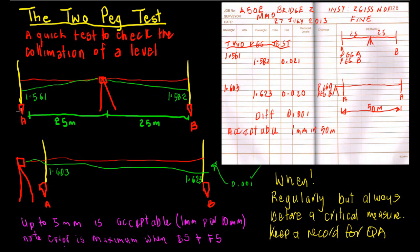Then we take a reading to staff A and we'll treat that as a backsight. So we've set up your level book or your field note. Here I've set up the level book.